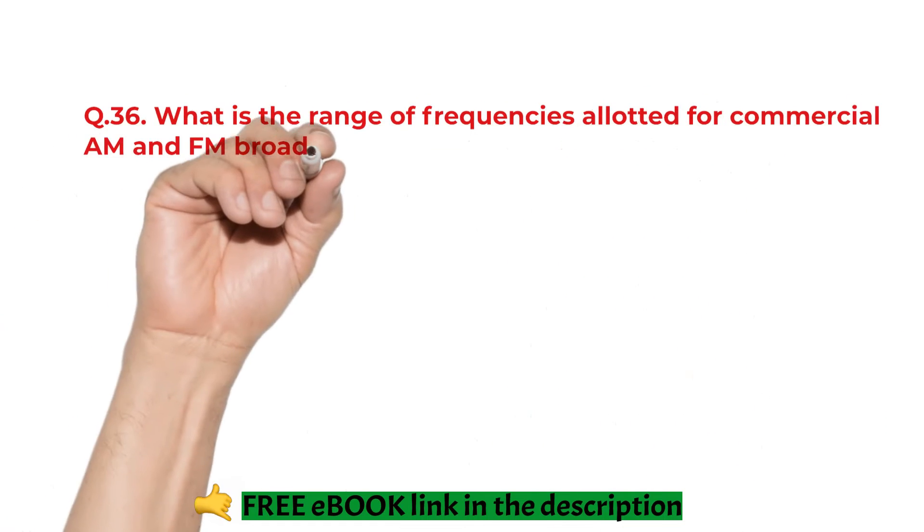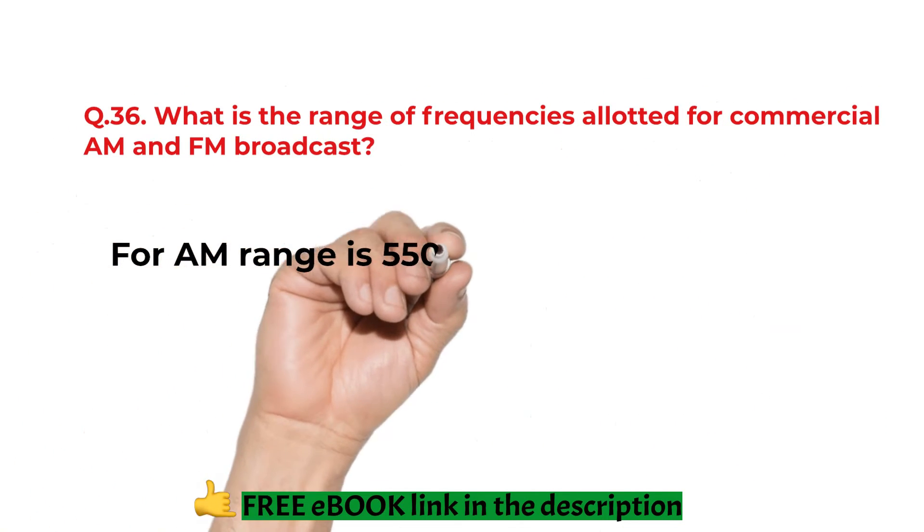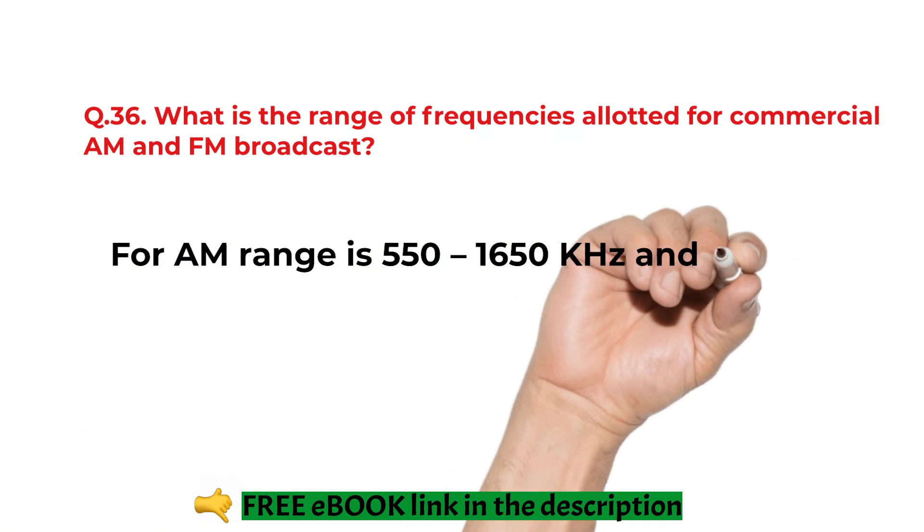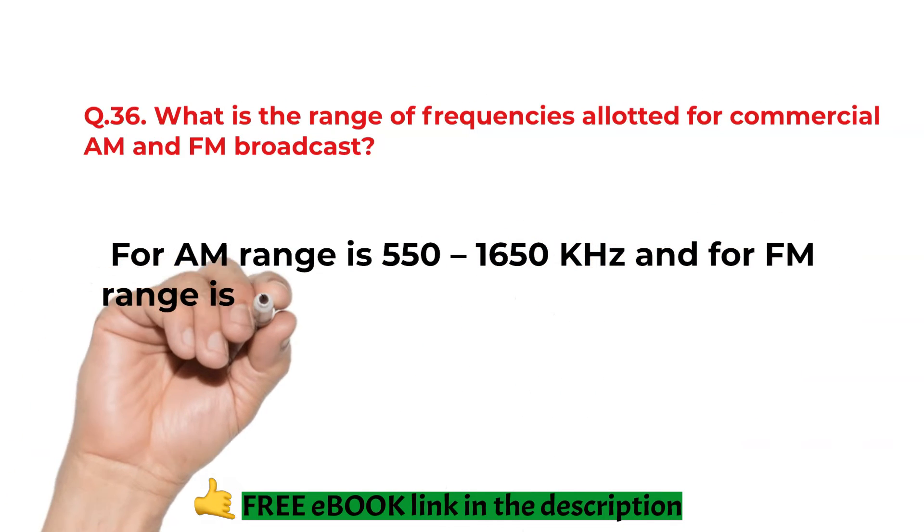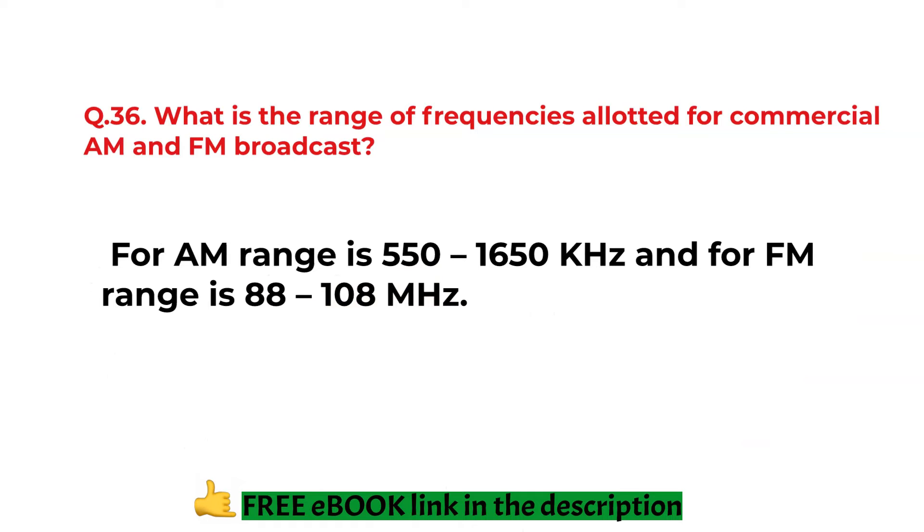What is the range of frequencies allotted for the commercial AM and FM broadcast? For AM, the range is 550 to 1650 kHz and for FM, the range is 88 to 108 MHz.